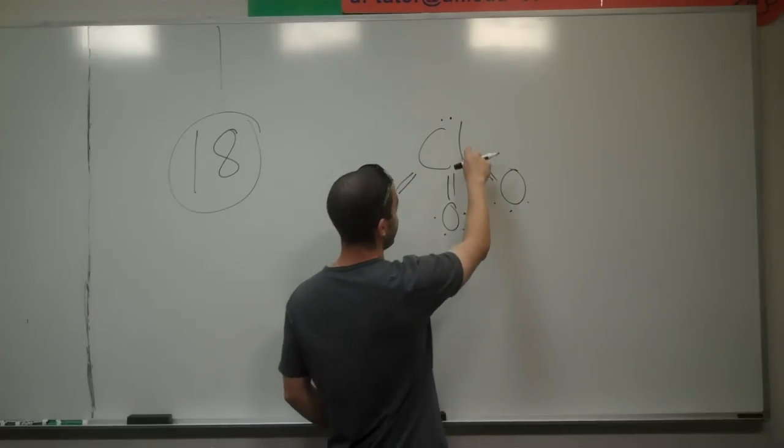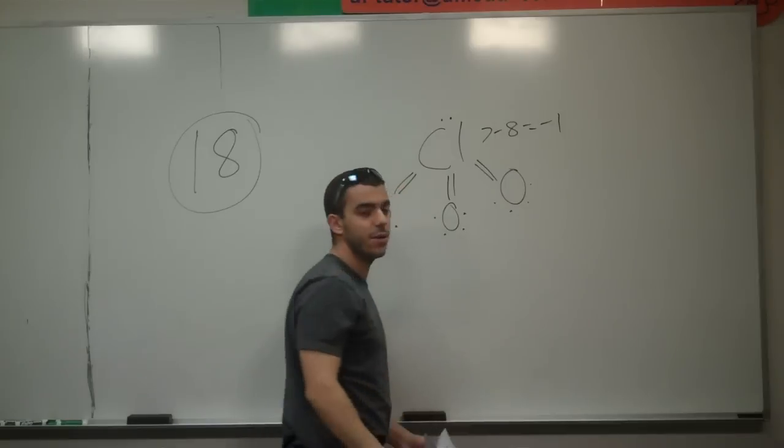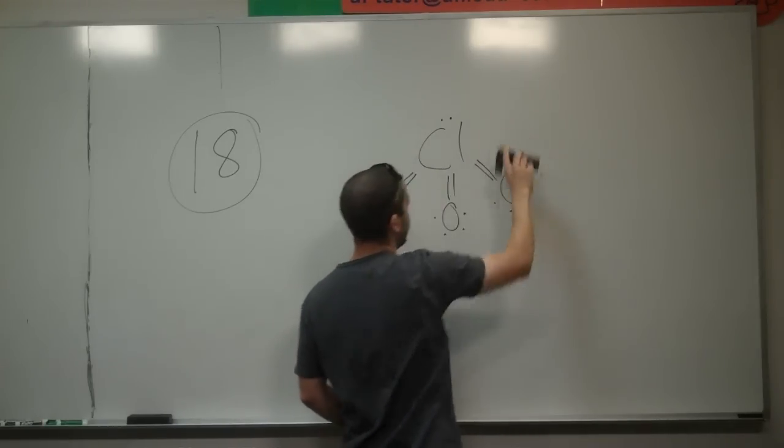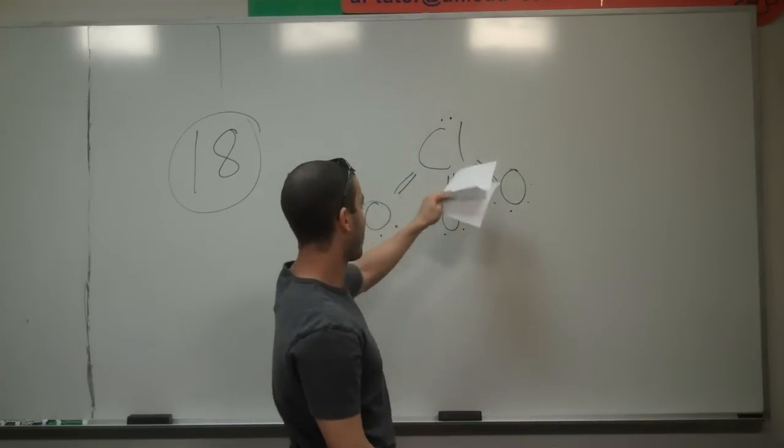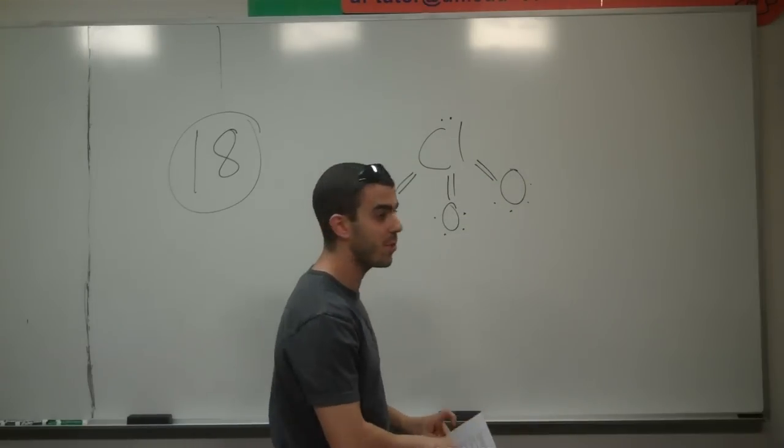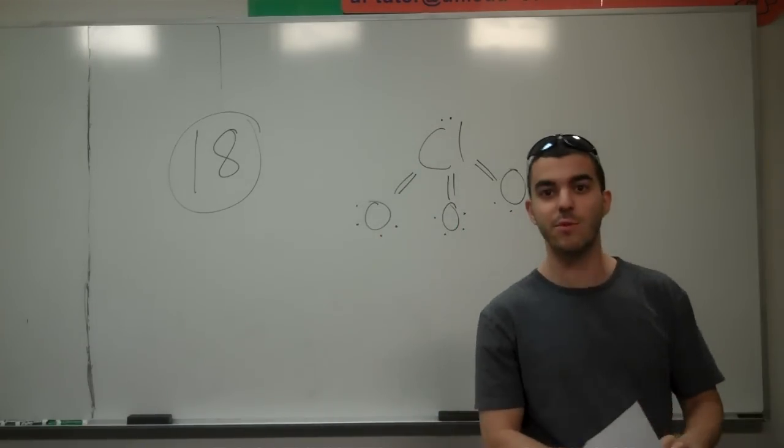When we calculate the formal charge, it would be seven minus eight equals negative one, right? So, in this case, this is a potential system where we've got three bonds and one lone pair, which give us trigonal pyramidal. So, our correct answer for that would be CLO three minus, which is number five.